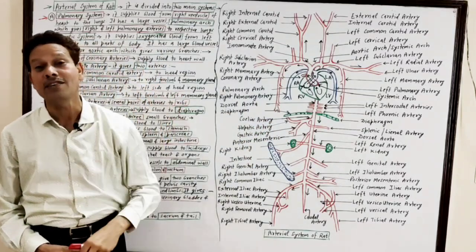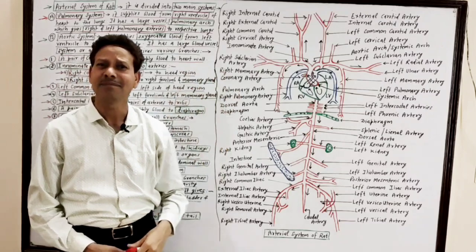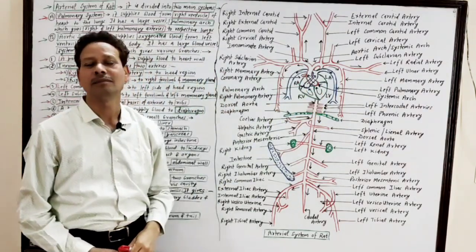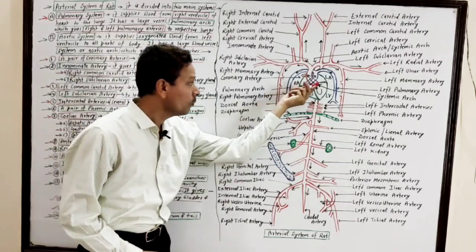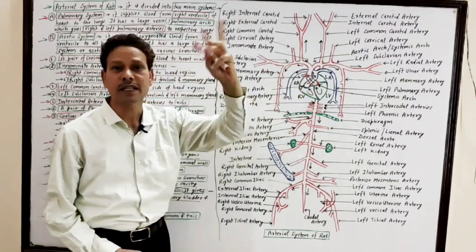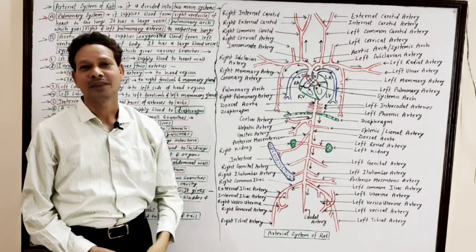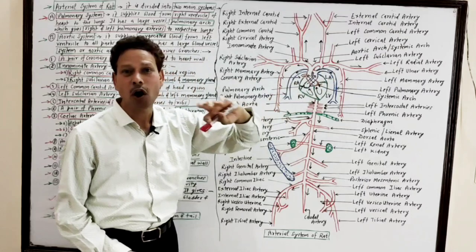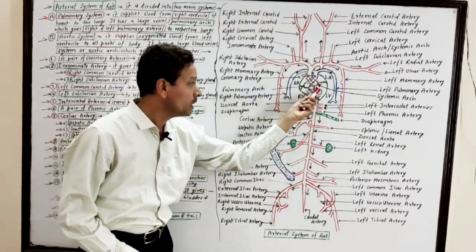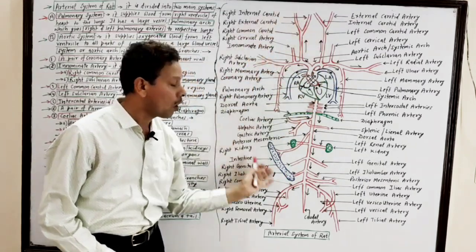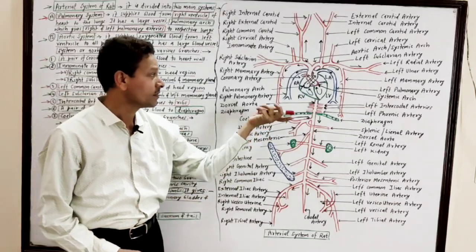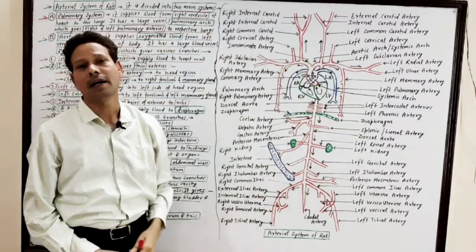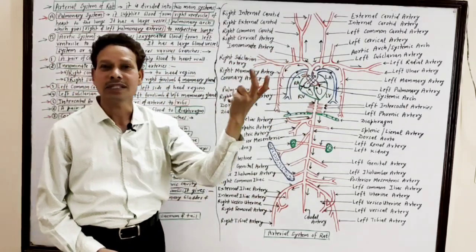The second part is the aortic system, also called the systemic or body system. In this system, oxygenated blood from the left ventricle is carried via the aortic arc or systemic arc to all body parts. This systemic arc gives several branches.